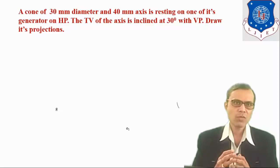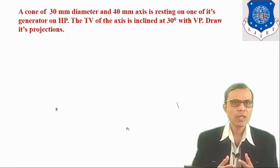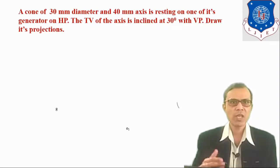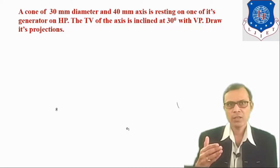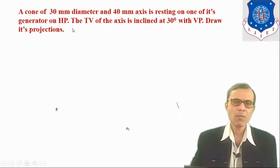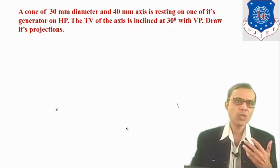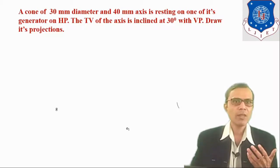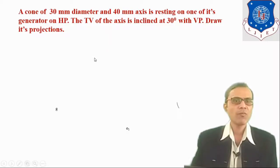We have to start from the true shape of the base, as we were doing in the case of projection of planes. Here, the true shape is a circle. So in the first step, we will draw a circle of diameter 30 mm. That is the true shape of the base, and from that, we will project its front view by taking the axis height as 40 mm. That would be our first stage.